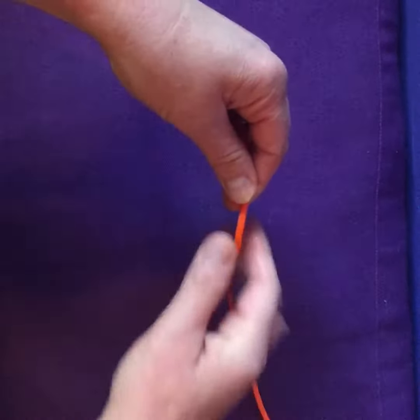In order to tie the Celtic button knot, the first thing you want to do is make two small overhand loops. And so when you do that, they're overlapping so that it looks kind of like a pretzel.